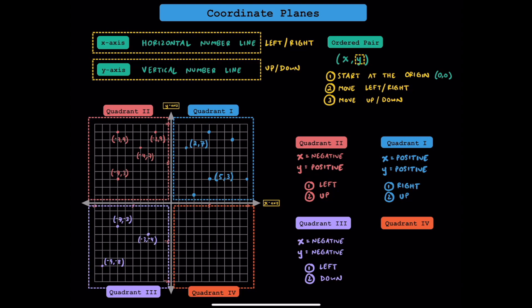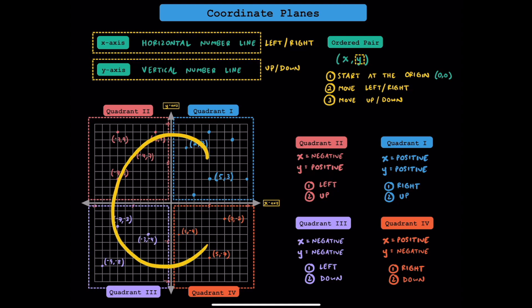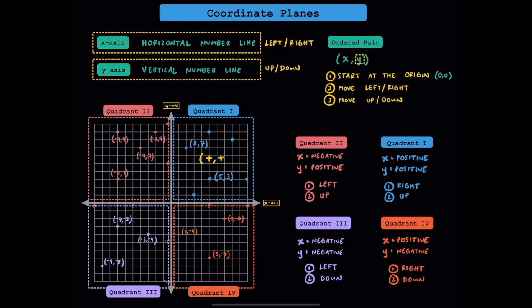And finally, let's look at quadrant 4. In quadrant 4, the x value is always going to be positive and the y value is always going to be negative. To get to quadrant 4, you always move to the right, then you move down. To remember the quadrants in order, you can draw a big C — they go quadrant 1, 2, 3, and 4. Remember: quadrant 1 is positive/positive, quadrant 2 is negative/positive, quadrant 3 is negative/negative, and quadrant 4 is positive/negative.